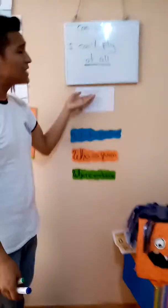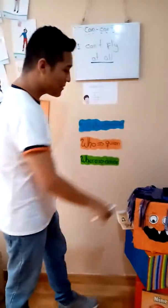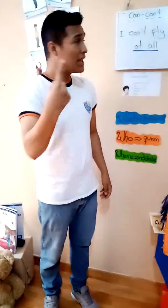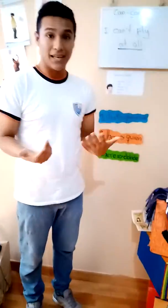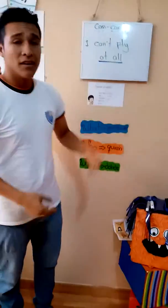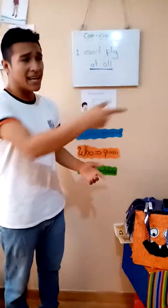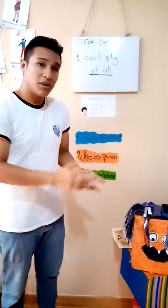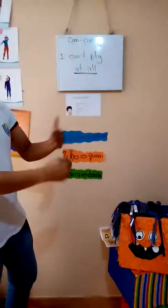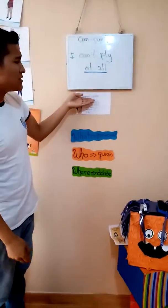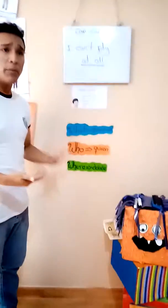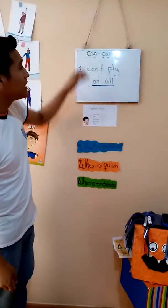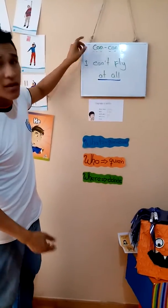So remember, can and can't have two functions. Function number one: to talk about abilities. Function number two: to talk about requests — for example, 'Can you give me that glass of water? Can you open the window? Can you help me?' And to complement this grammar, we use the degrees of ability to say how well the person does the action, using, of course, can and can't.